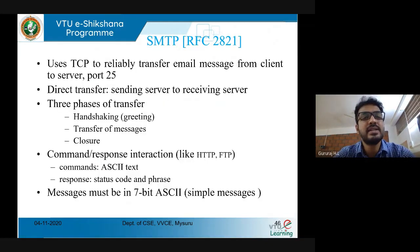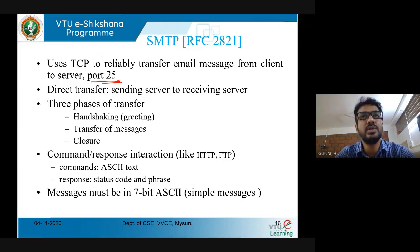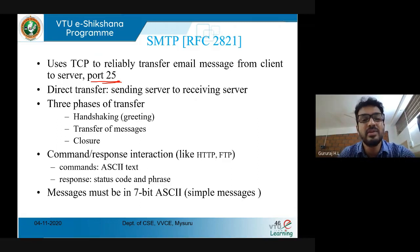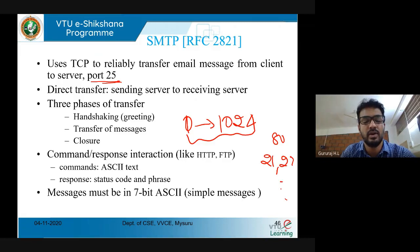SMTP works with the underlying TCP protocol — a reliable protocol — using port number 25. Port numbers are unique numbers assigned by the machine for hardware communication between sender and destination. Port numbers range from 1 to 1024 as default port numbers, already assigned to different protocols — for example, HTTP uses port 80 and FTP uses ports 21 and 23.